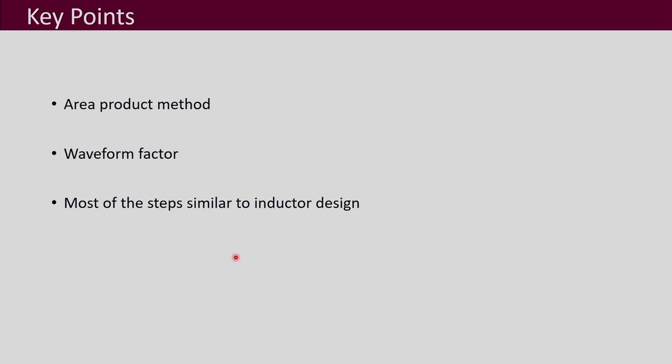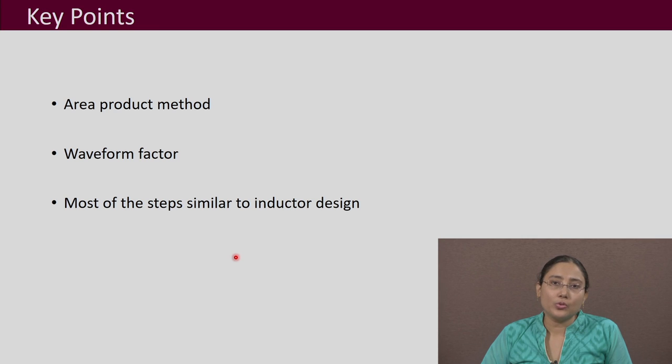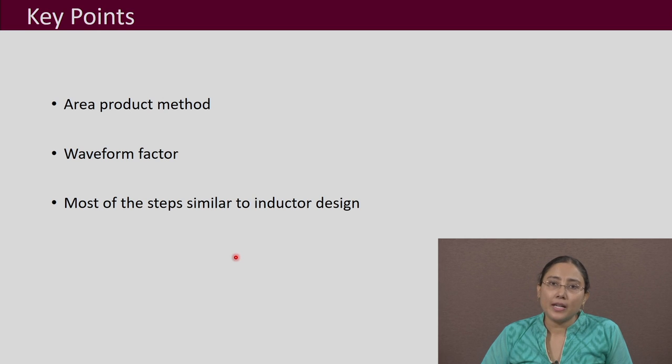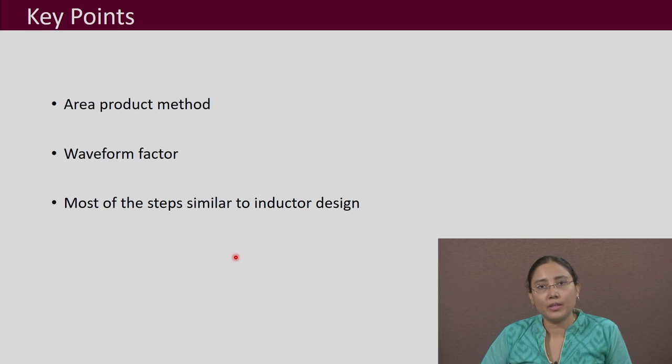The key points of this lecture are that the area product method is a well-known and widely used method for magnetics design. For transformer design you need to know the waveform factor Kf, which can be found in textbooks and application notes for your particular converter topology. Most steps for transformer design are similar to inductor design with very small differences, and you must be careful to note those differences while performing the transformer design.